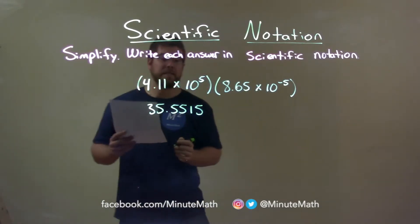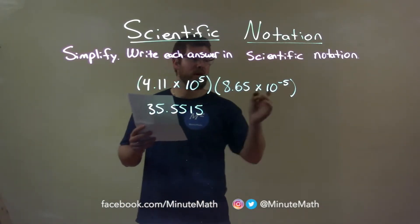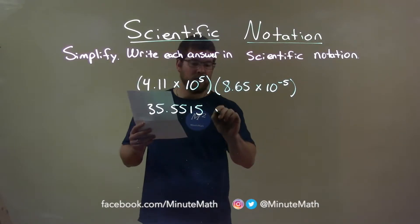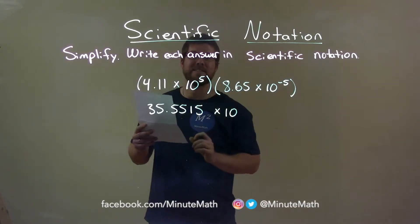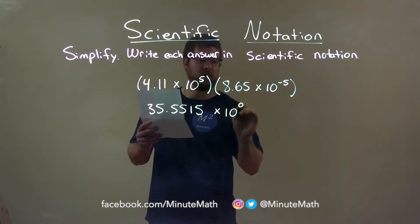Now the tens. 10 to the 5th times 10 to the negative 5th. When we multiply the same base, we add the exponents. 5 plus negative 5 is 0, so 10 to the 0th power.